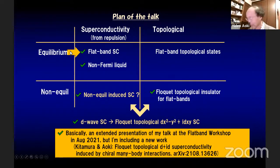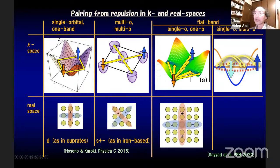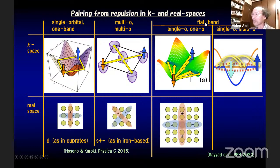Let's start with flat band superconductivity. This is the classification of pairing from repulsive interactions in momentum space and real space. We have a single orbital one-band system in k-space, a single band dispersion, a multi-orbital multiband system, and a flat band system — both single orbital one-band flat band and single orbital multiband flat band in k-space and real space.